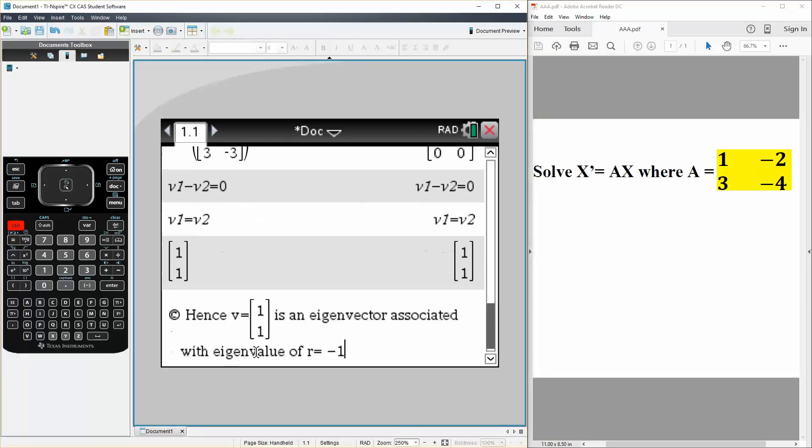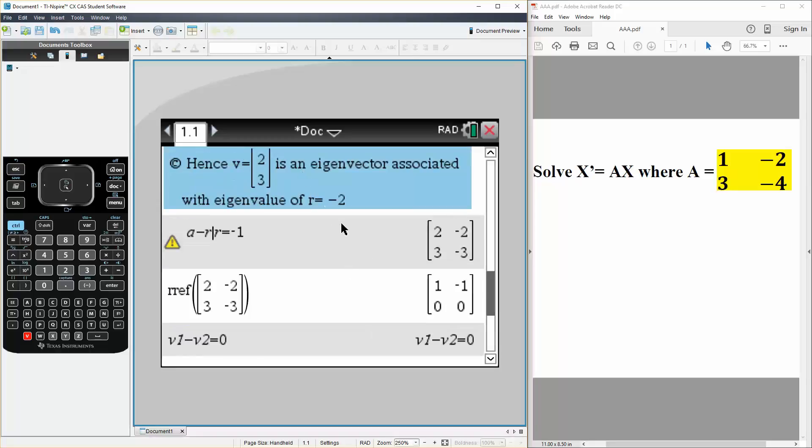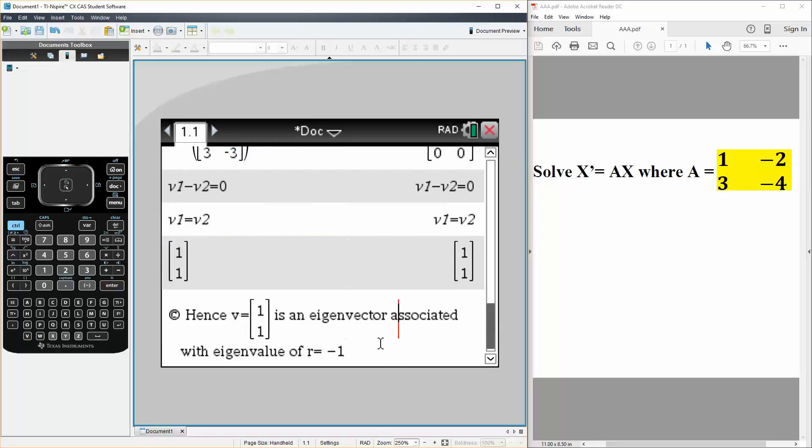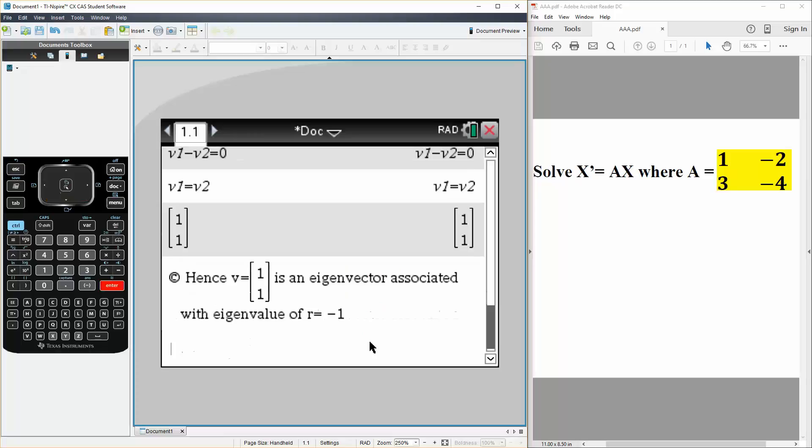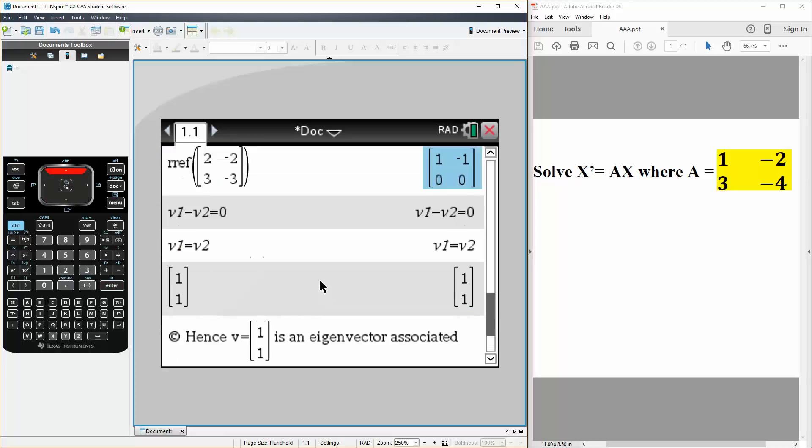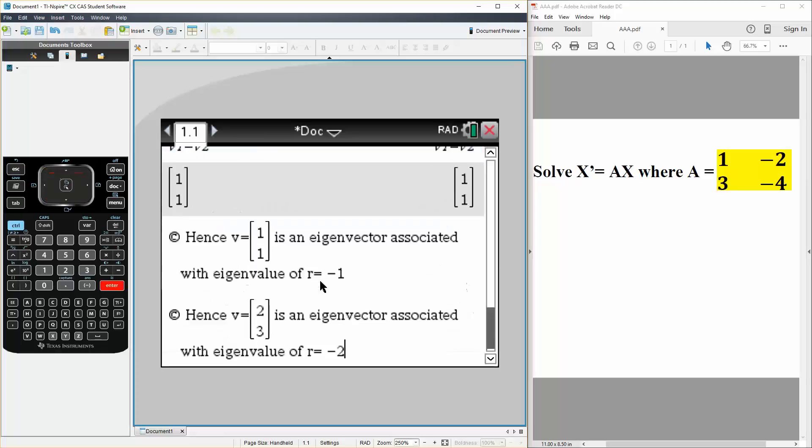And so like what we did for the other problem, we will say, hence V is equal to [1, 1] is an eigenvector associated with the eigenvalue of R is equal to minus 1. And so let me just pull up the other thing we wrote, this one right here. So let me first hit enter for this, and let me pull up the other one, hit enter.